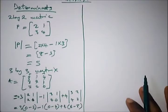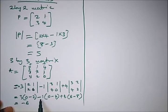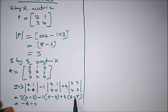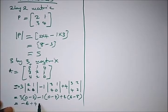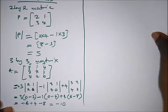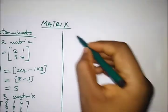So we have: 3 times (−2) equals −6; minus 1 times (−4) equals +4; and 4 times (6 minus 8) equals 4 times (−2) equals −8. Combining: −6 plus 4 is −2, and −2 minus 8 gives us −10. So this is how we solve for a 3 by 3 matrix determinant.